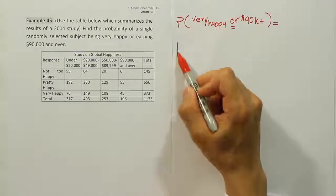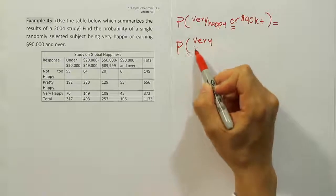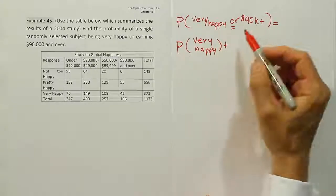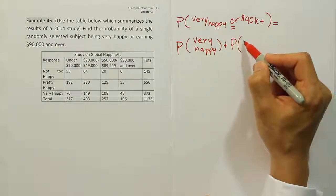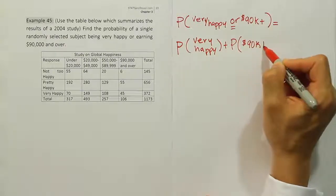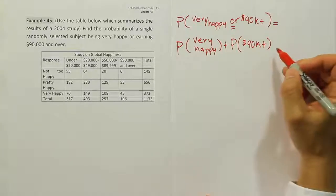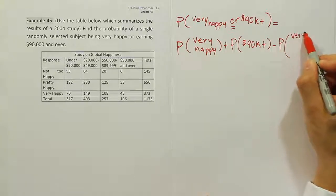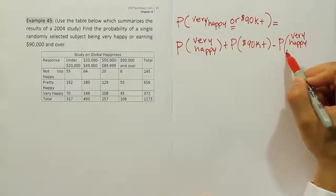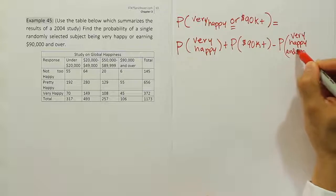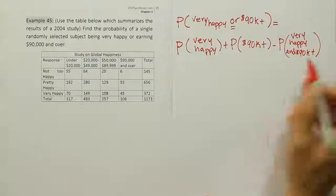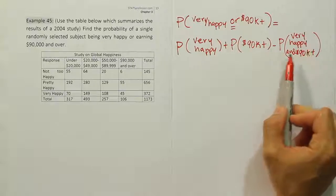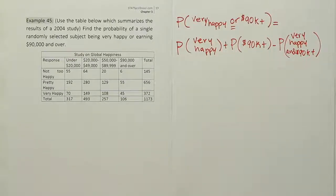If we're doing the addition rule, this breaks down into three probability statements. The first is the probability of 'very happy,' the second is the probability of 'earning ninety thousand dollars or more per year' (90K+), and then minus the probability of both — very happy AND earning ninety thousand dollars or more per year.